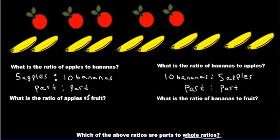What is the ratio of apples to fruits? Now we have 5 apples. So we have 5 apples. But how many fruits do we have? I'm going to write it like this. 5 apples, but fruits is everything. It's the entire picture. It's the total. It's the whole.